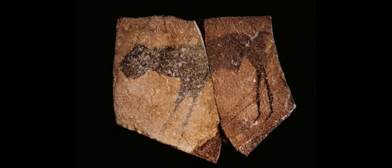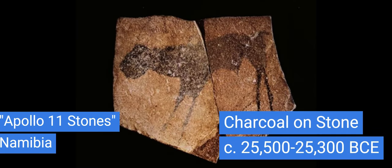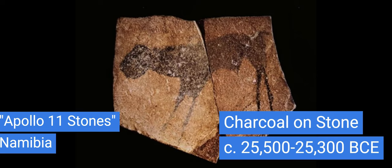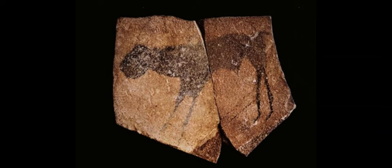Paleolithic. The first work of art is piece number one from the Paleolithic period — this is Apollo 11 Stone. This is found in Southern Africa on the Atlantic side, and was created roughly around 25,500 to 25,300 BCE. This is charcoal on stone, founded by the German archaeologist Wolfgang Eckvent.